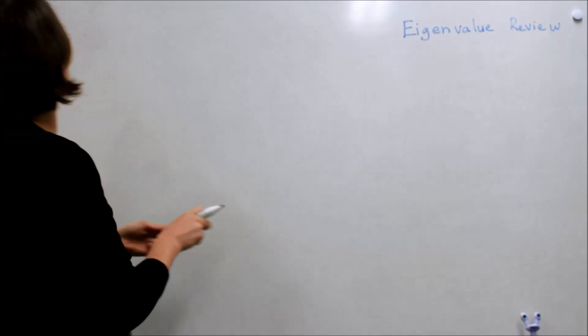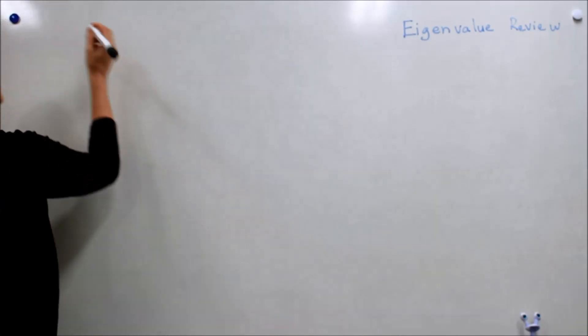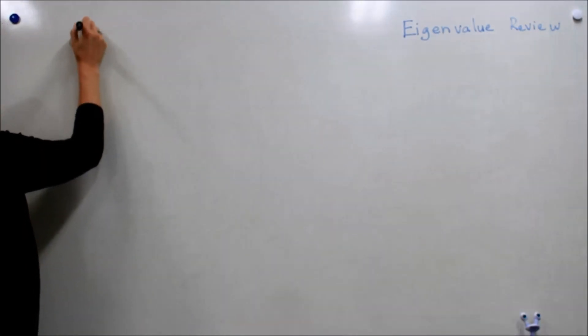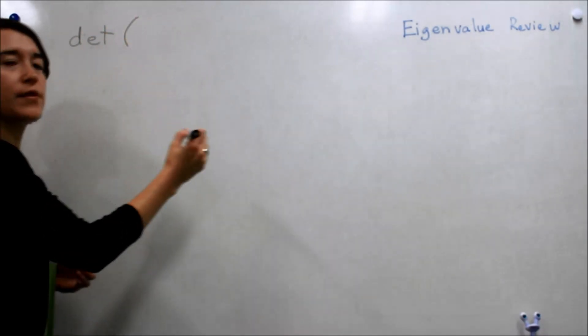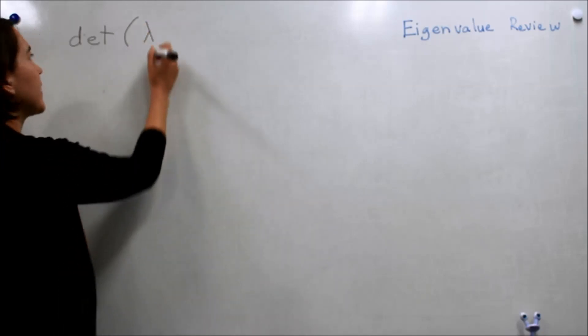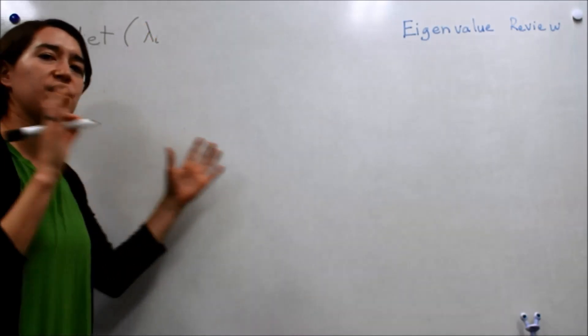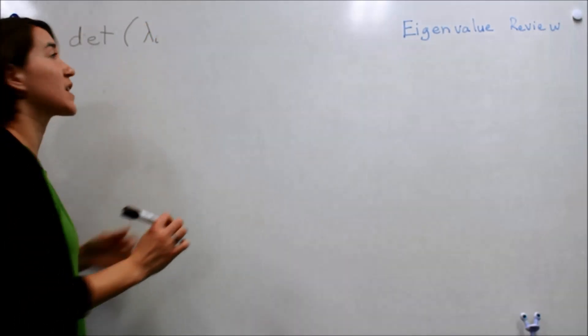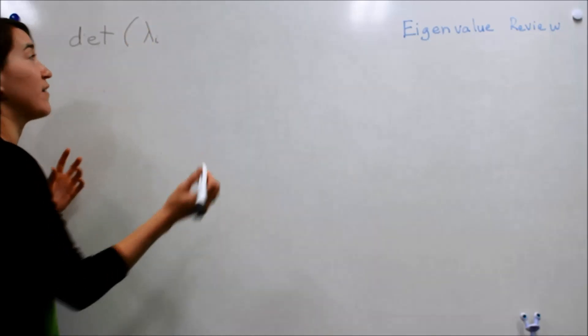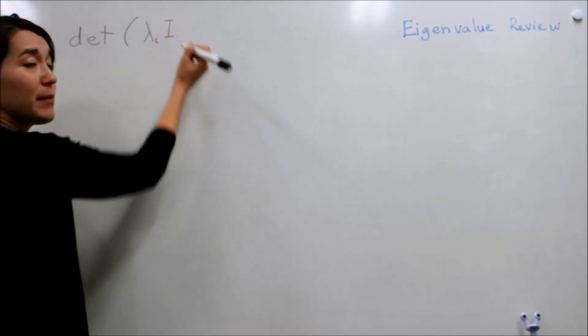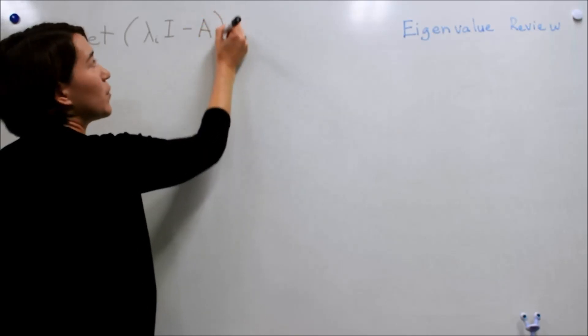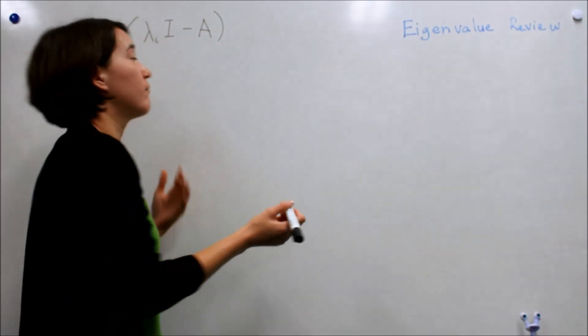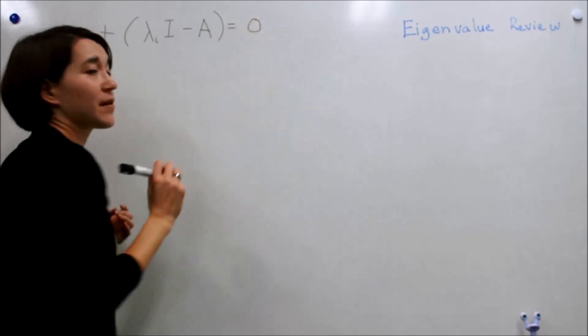To find an eigenvalue, the basic equation is here. We use the determinant of, and you want to take lambda, and depending on the dimension of your matrix, there might be multiple eigenvalues, times the identity matrix, and then minus A, which is the matrix that you're solving. That all equals zero.